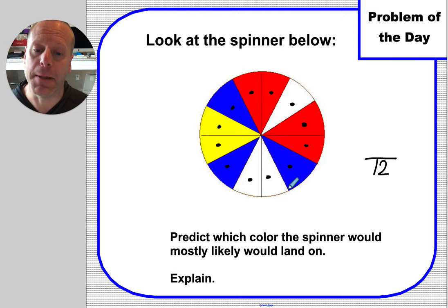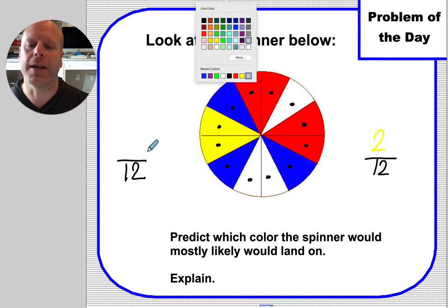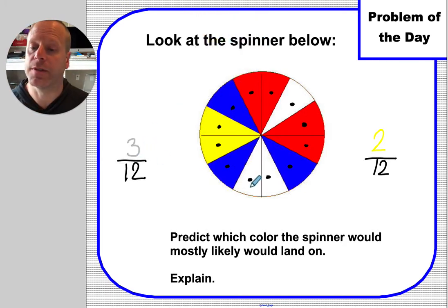How many of them are yellow? 2 12ths. Sorry about that being hard to see. How many of them are white? I don't even know what color to use for white. I'm going to use gray, I guess. 3 12ths. How many of them are blue? 3 12ths. How many of them are red? 4 12ths.